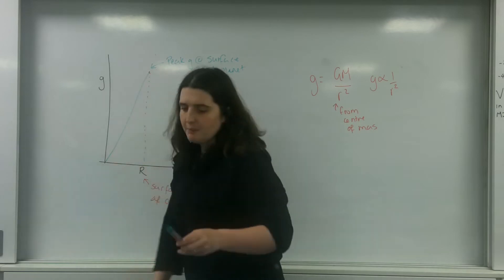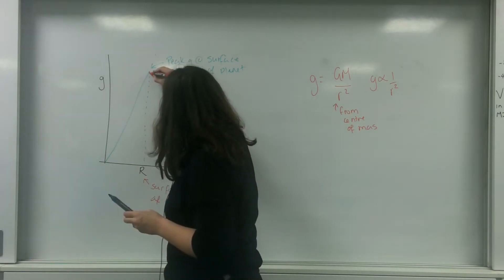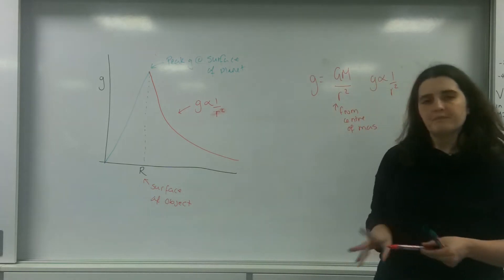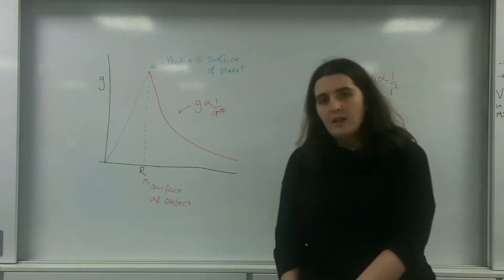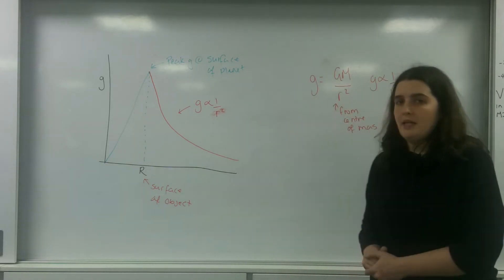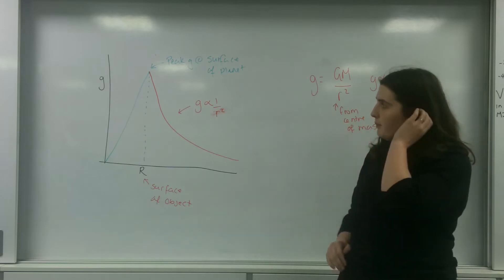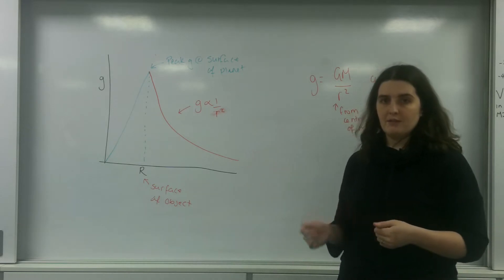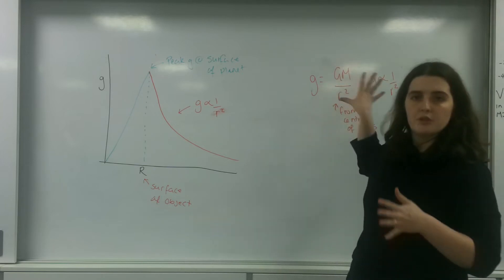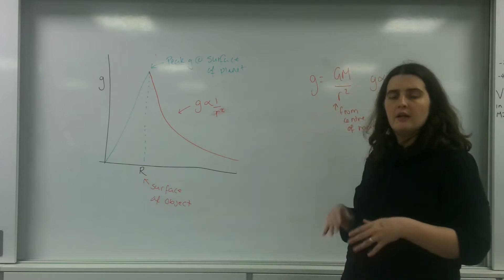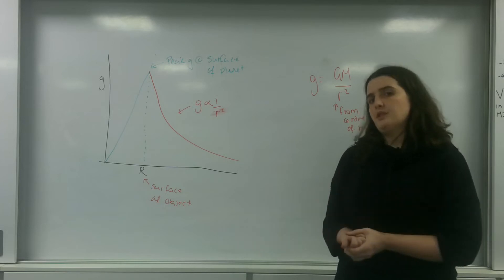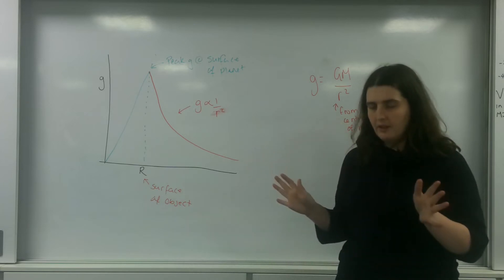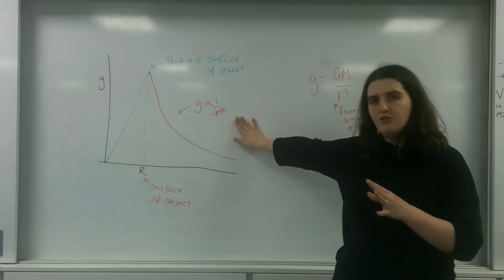I do apologise — that should be a much deeper curve than it is. So, this is one of the important things you must take into consideration: up until we reach the surface of the object, the mass is increasing and is not constant, so this formula does not work. Only after we've reached the surface of the actual planet, star, or whatever, is g proportional to 1 over R squared true.